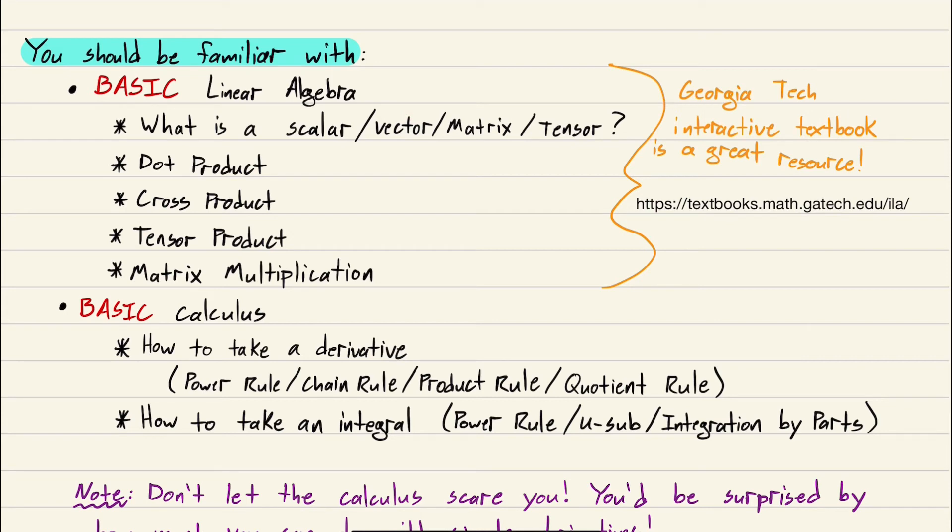If you can do a dot product, cross product, multiply matrices, and tell me what a vector is, you're golden. If not, that's okay. I'll do a review in the second video. You might have to do a little homework on your own to catch up. This Georgia Tech textbook is a really good interactive resource for learning linear algebra. But again, with just dot product, cross product, matrix multiplication, and knowing what a vector is, you can do so much in dynamics.